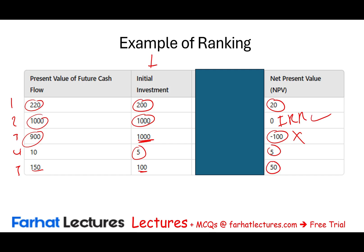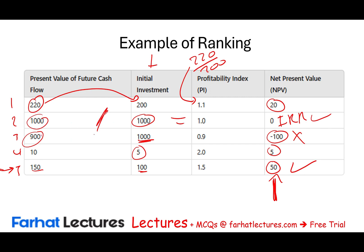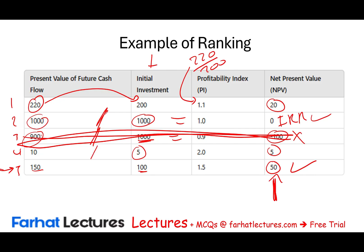Now, which project will you select? Based on NPV alone, you'd say invest in project 5 because its NPV is the highest. But you have to compare the PIs to allocate resources appropriately. Project 1: 220 ÷ 200 = 1.1. Project 2: 1,000 ÷ 1,000 = 1. Project 3: 900 ÷ 1,000 = 0.9 — this project is out. Project 4: 10 ÷ 5 = 2. Project 5: 150 ÷ 100 = 1.5. Project 4 has the highest profitability index.